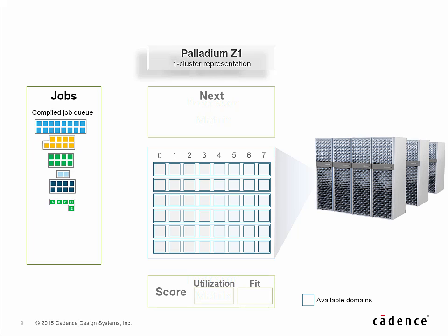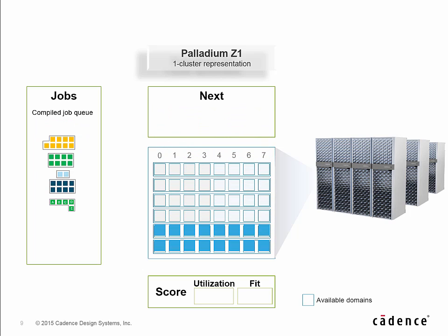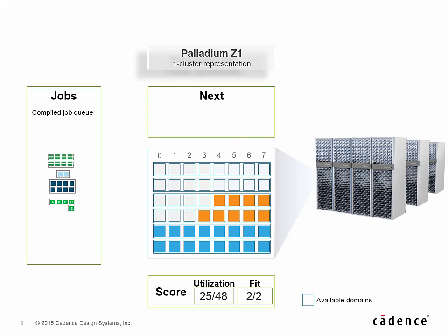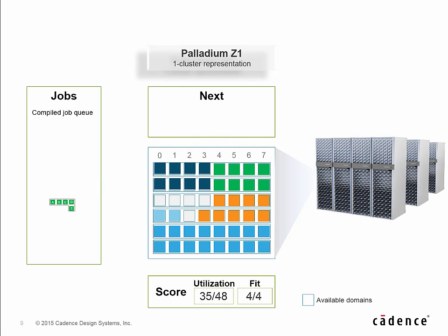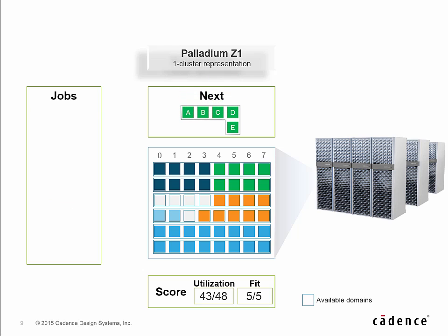Let's take a look at dispatching a set of jobs waiting in a queue. Jobs are dispatched: a 16 domain job, followed by a nine domain job, then an eight domain job, a two domain job, and then another eight domain job. The next five domain job is L-shaped, but won't be able to fit in the available domains in the computing cluster, since the other jobs are still running.